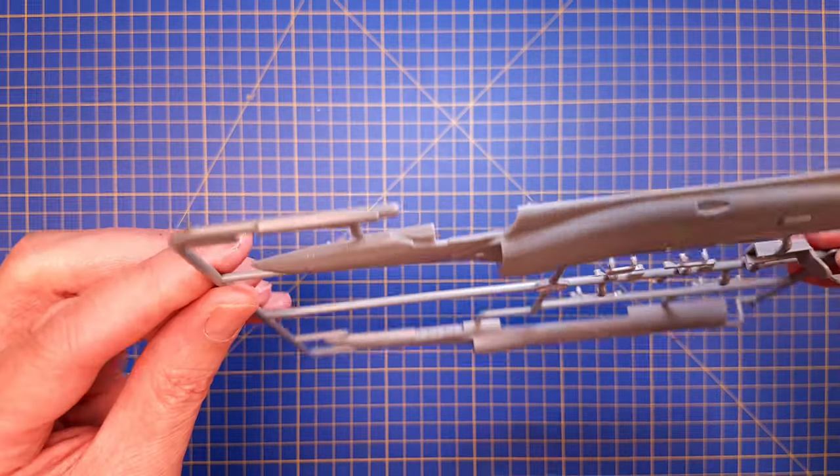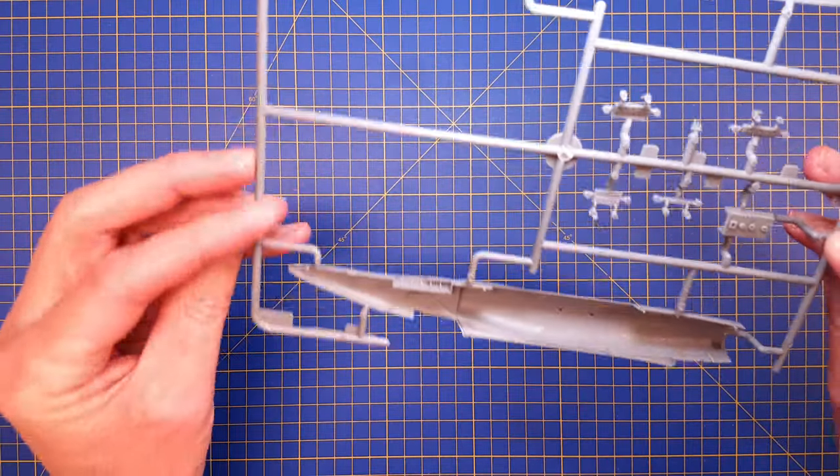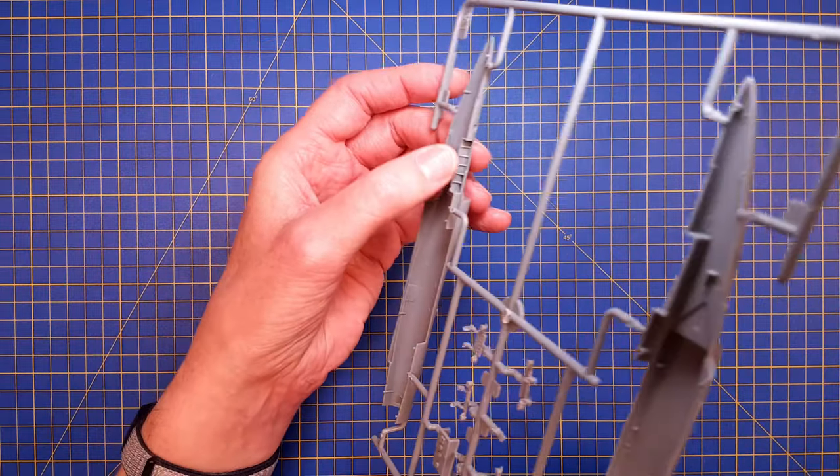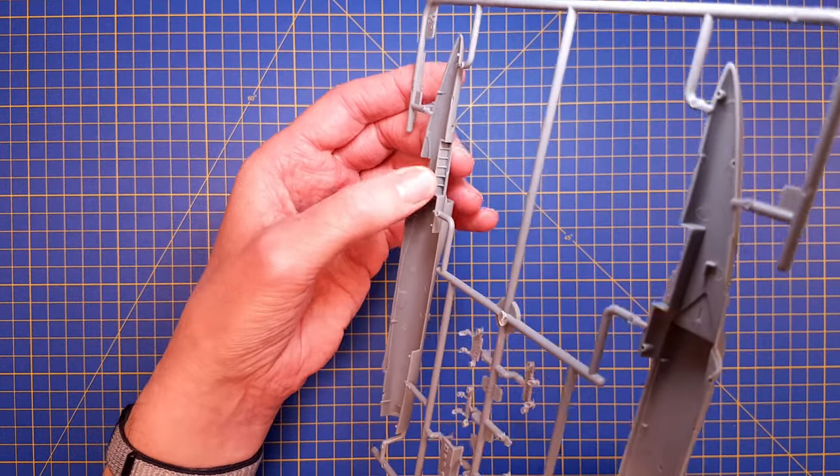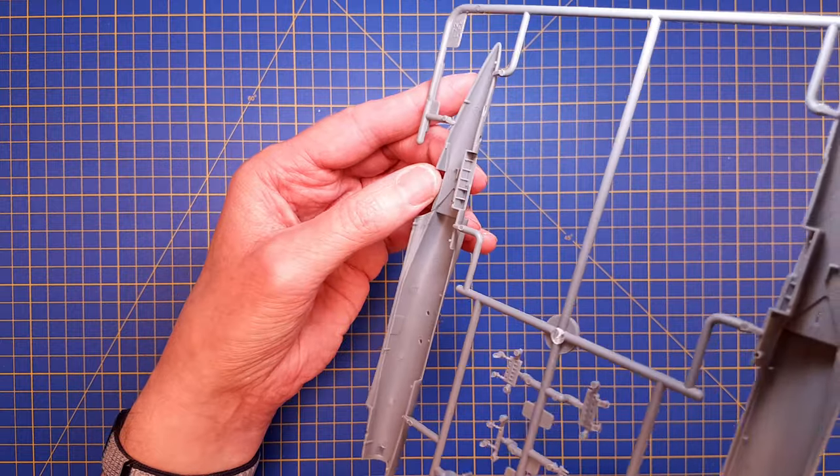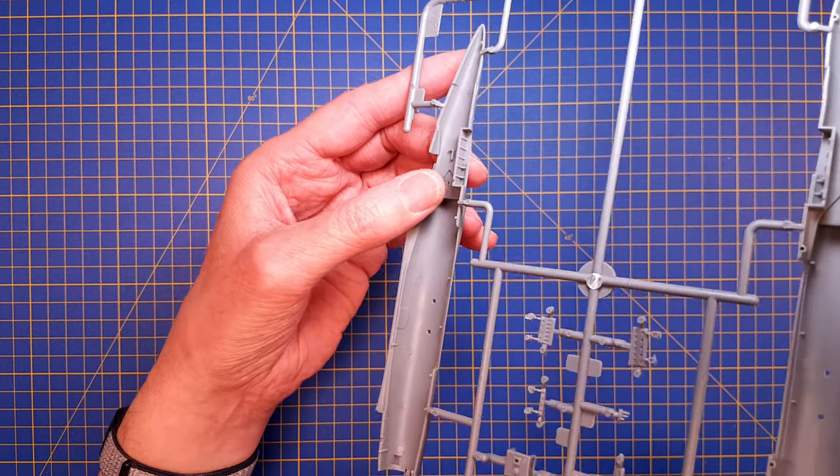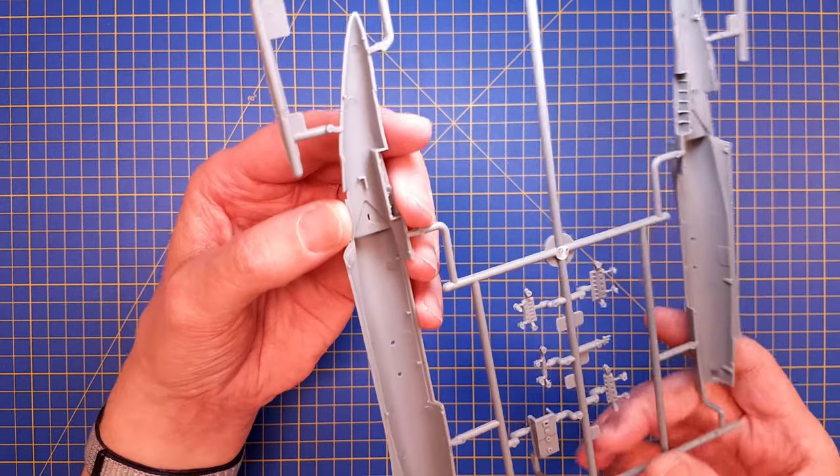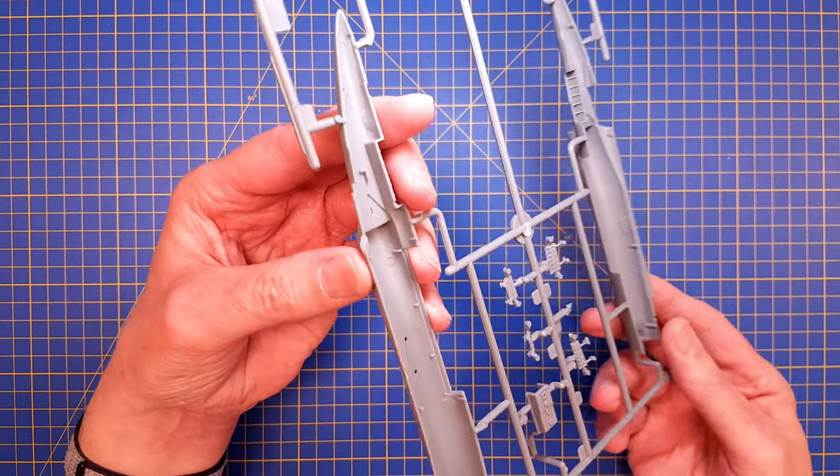Everything looks really nice. This is quite an interesting solution. We have a parting line in the middle of the nose landing gear bay here, but I guess that's okay.